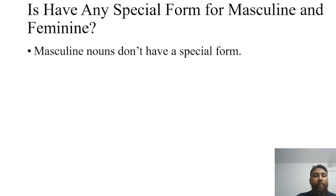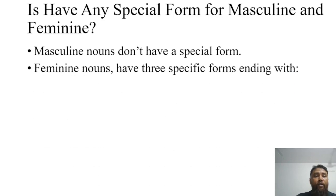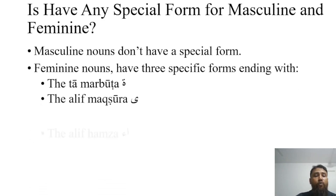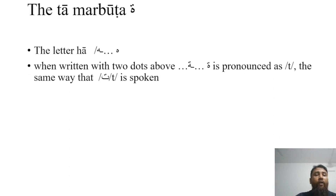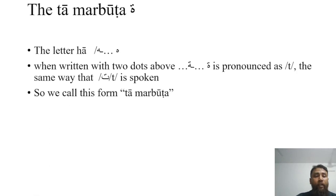The masculine nouns don't have a special form, but on the other hand, the feminine nouns have three specific forms: ending with the tamarbuta, the alif maksura, and the alif hamza. The first form is the tamarbuta — the letter ha. When written with two dots above ha, it is pronounced as ta, the same way that ta is spoken. So we call this form tamarbuta.